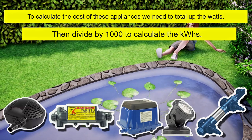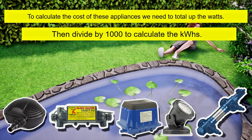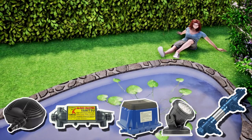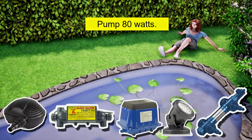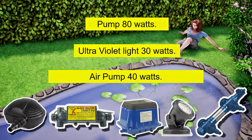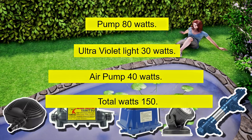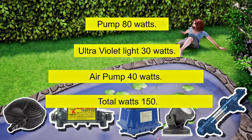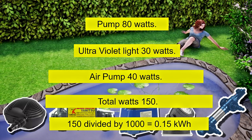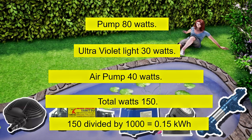The good news is that these items are not normally massive consumers. The average 2000 gallon koi pond will be running a pump of approximately 80 watts, a 30 watt UV light, and an air pump around 40 watts. Add these together and you get a total of 150 watts. Divide this by 1000 to convert it into kilowatt hours and you have 0.15 kilowatt hours.